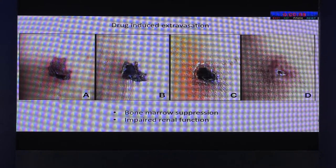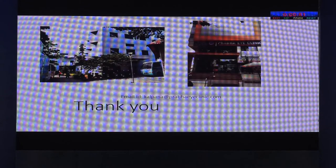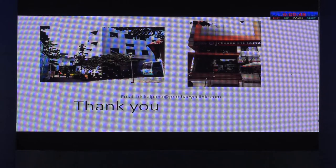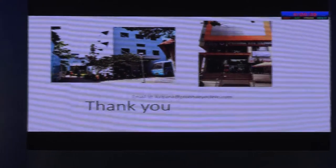Other important considerations to keep in mind are bone marrow suppression and impaired renal function when these patients are on drugs. This has been a capsule covering CMV-related uveitis, highlighting major clinical features and what we need to look for in these patients. Thank you.